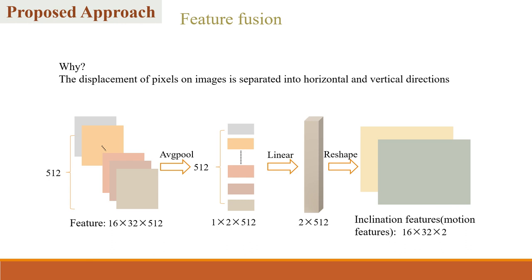To obtain the inclination features, we start by applying average pooling to the features to capture the global information of the image. Subsequently, a linear layer is used to fuse these features to express the tilt in different directions and align with the pixel displacement channels. We reshape the features to obtain the final inclination features. This process allows us to effectively represent the tilt in various directions caused by the camera's inclination.